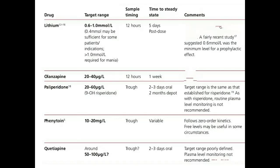Paliperidone: target range is 20–60 micrograms per liter; sampling time 12 hours (trough, meaning minimum amount of drug in plasma); time to reach steady state 2–3 days. Target range is the same as that of established restorative doses. Phenytoin: target range is 10–20 mg per liter; sampling time is trough; time to reach steady state is variable — follows zero-order kinetics; pre-level may be useful in some circumstances.